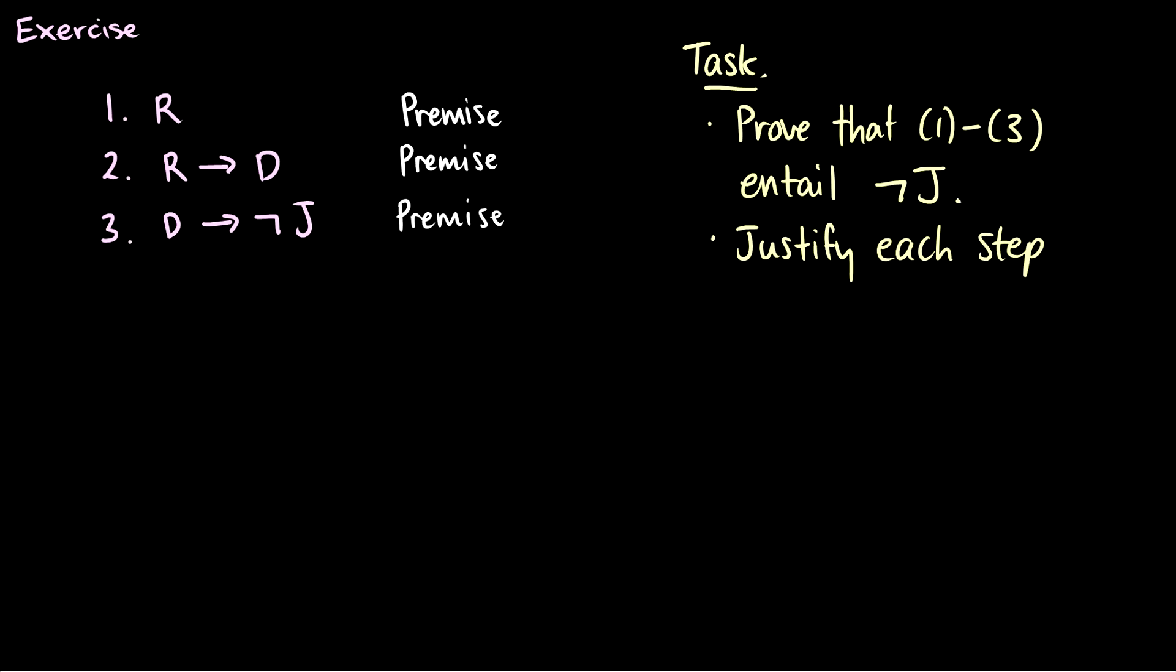And of course, if you remember them all, just seeing them out the first time. Wow, incredible. Of course, I expect you to pause the video and go back and learn them and do practice with those. But let's just do some examples. So for the first one, I have three premises. I have R, R arrow D and D arrow not J. And I want to prove that one through three entail not J. And we need to justify every step.